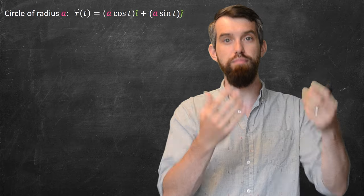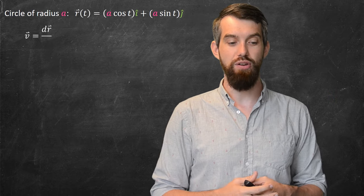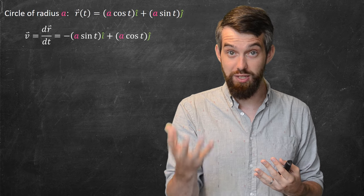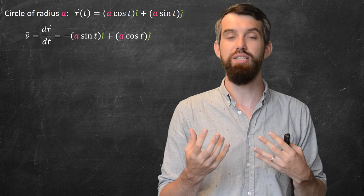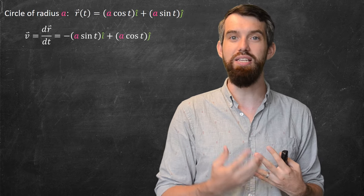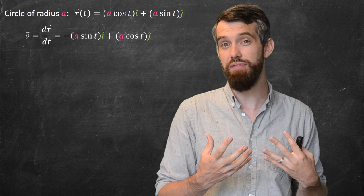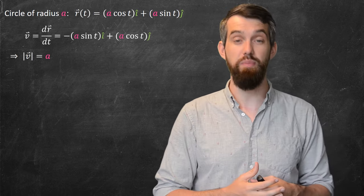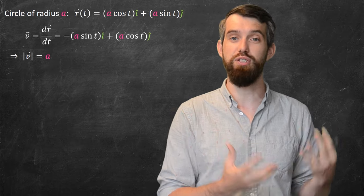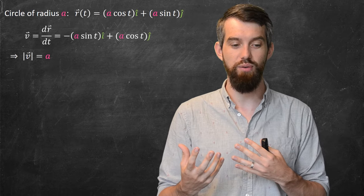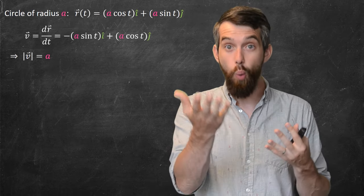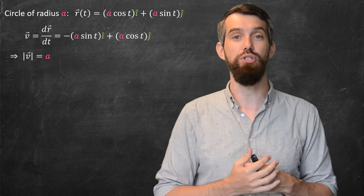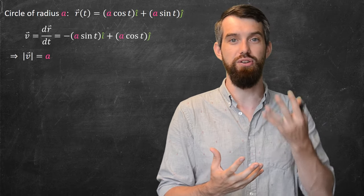This is with respect to t, just some generic parameter here, and I'm going to compute the velocity, which is the derivative of this position vector with respect to t. It's going to be minus a sine t in the i-hat direction and a cosine of t in the j-hat direction. So that's the v-vector. Thus its length, which is going to be the square root of the first component squared plus the second component squared. Well, sine squared plus cosine squared is 1, so what I have is square root of a squared, so it's just going to be equal to a. The length of the velocity vector is the radius.